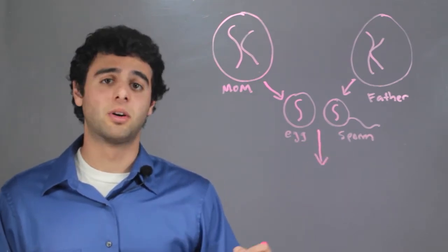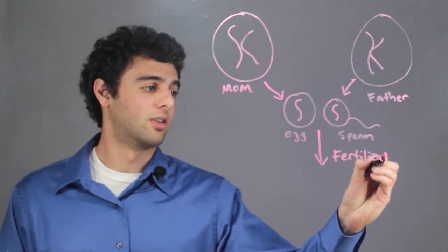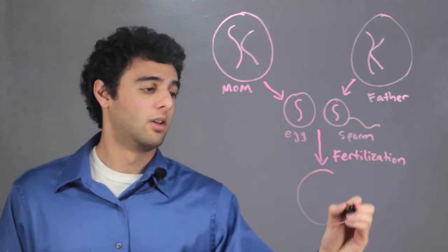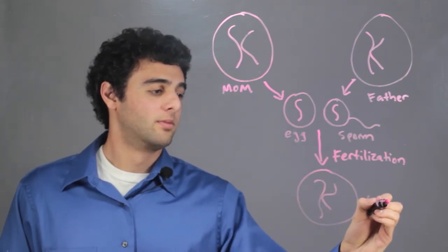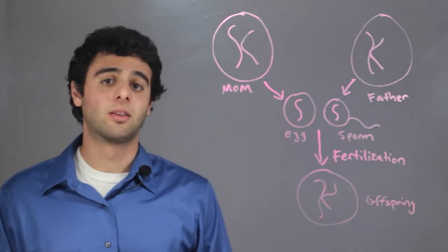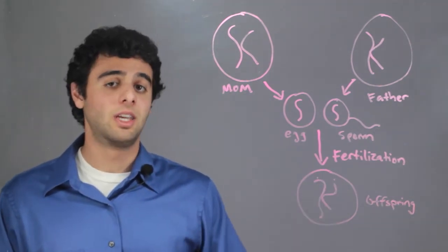The egg and the sperm combine using fertilization. Then we get an offspring who just like the mother and father has two sets of chromosomes, each with genes.